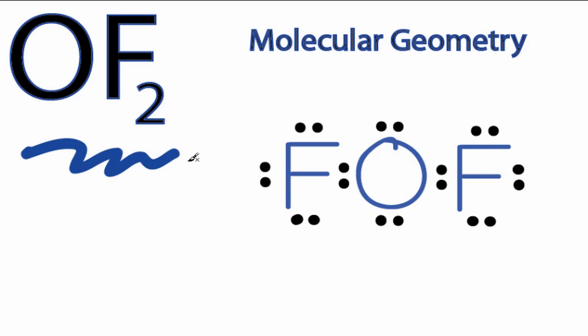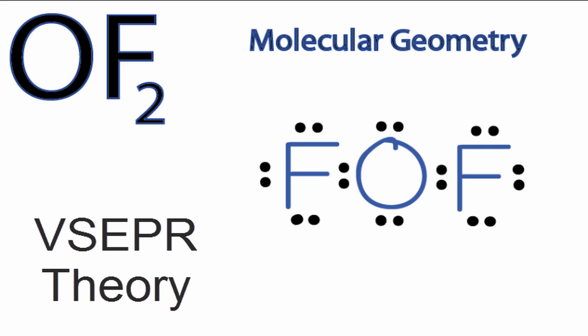For the OF2 molecular geometry, we'll look first to the Lewis structure. We know from valence shell electron pair repulsion theory that the atoms and the lone pairs of electrons around the central atom are all going to push away from each other, and that's what gives OF2 its shape.